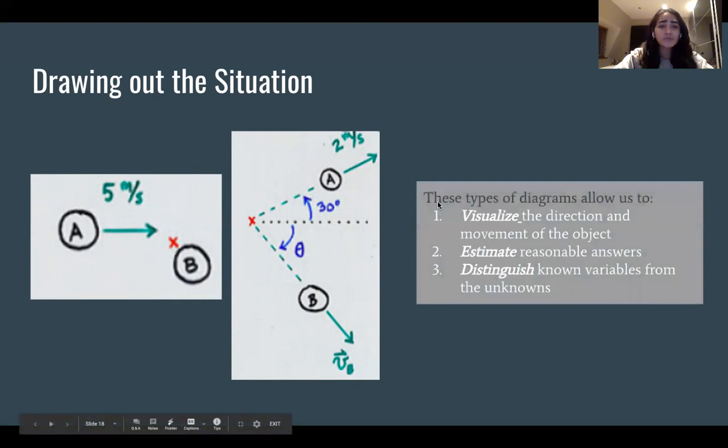So these type of diagrams are really helpful when we try to actually visualize the problem. We can understand the direction and the movement of this object. For example, we know that A has a 30 degree angle and it's going in this direction. It can also help us understand the reasonable answers to think about.